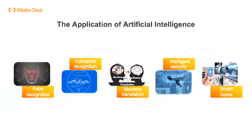Intelligent security can implement automatic monitoring and management of a security system. Smart home is a kind of living environment which takes residence as the platform, integrates the facilities related to home life by various scientific and technological means, constructs an efficient management system of residential facilities and family schedule affairs, improves the safety, convenience, comfort, and artistry of home, and realizes a living environment of environmental protection and energy saving.